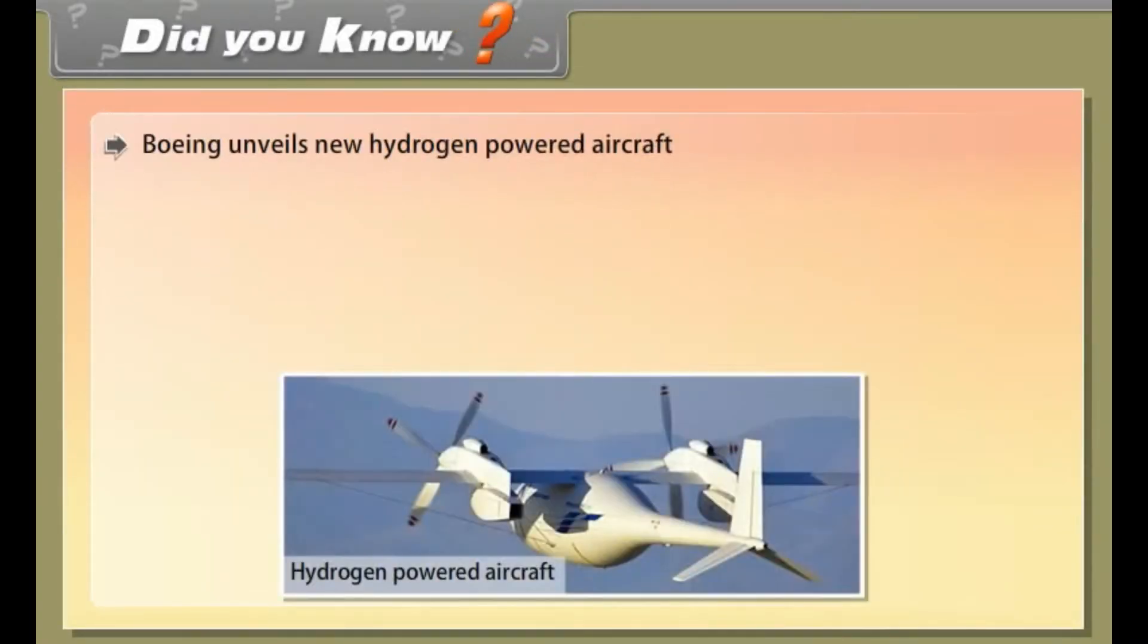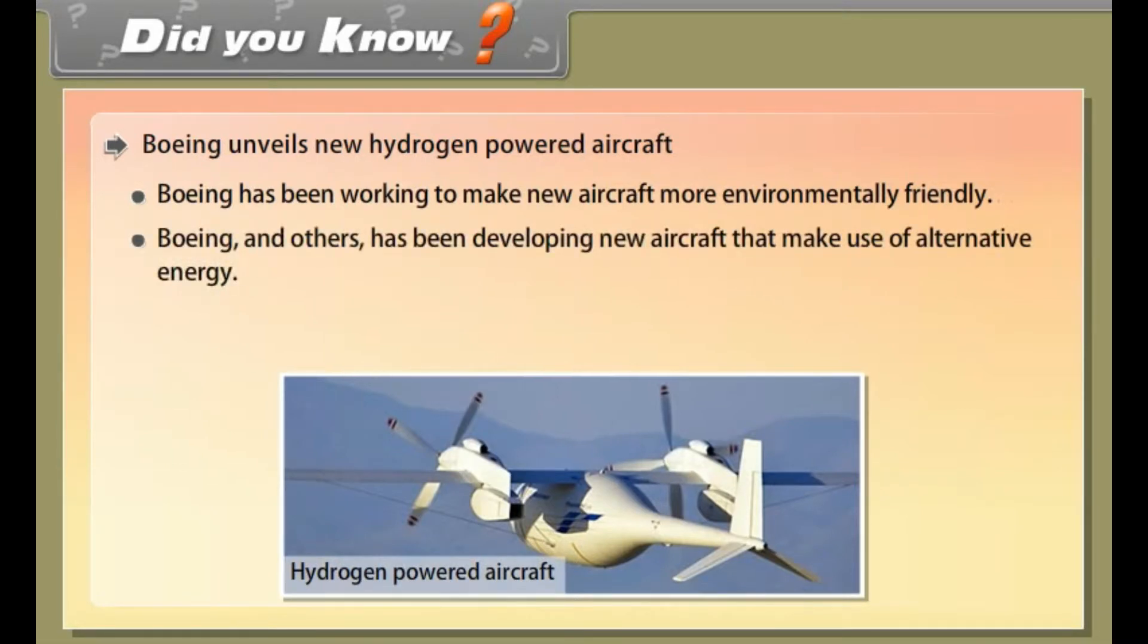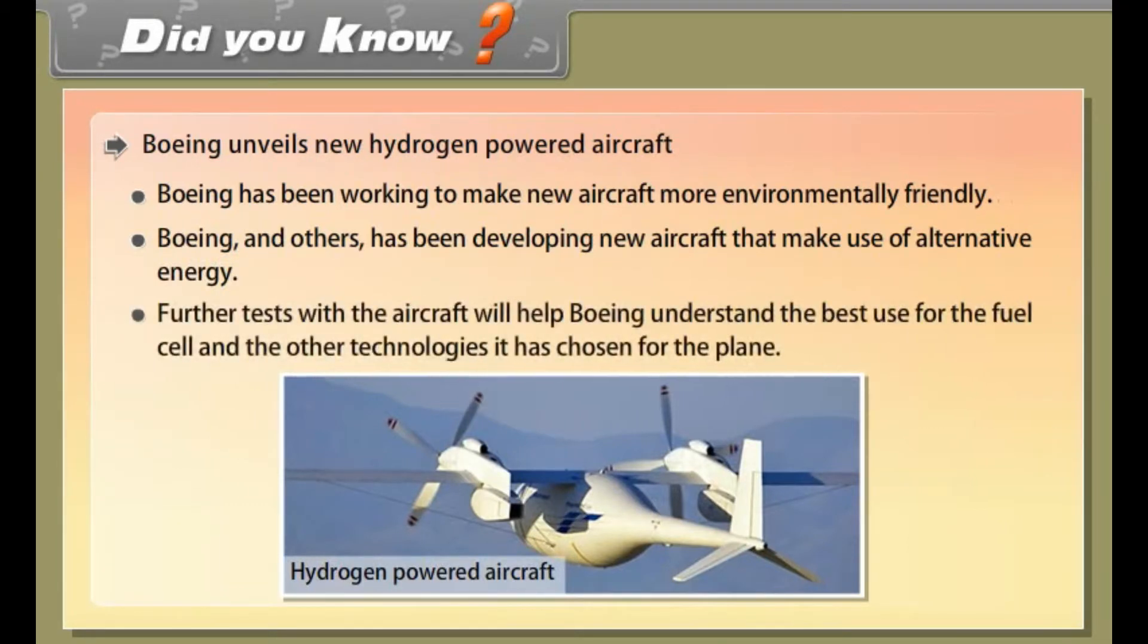Did you know? Boeing unveils new hydrogen powered aircraft. Boeing has been working to make new aircraft more environmentally friendly. Boeing and others have been developing new aircraft that make use of alternative energy. Further tests with the aircraft will help Boeing understand the best use for the fuel cell and the other technologies it has chosen for the plane.